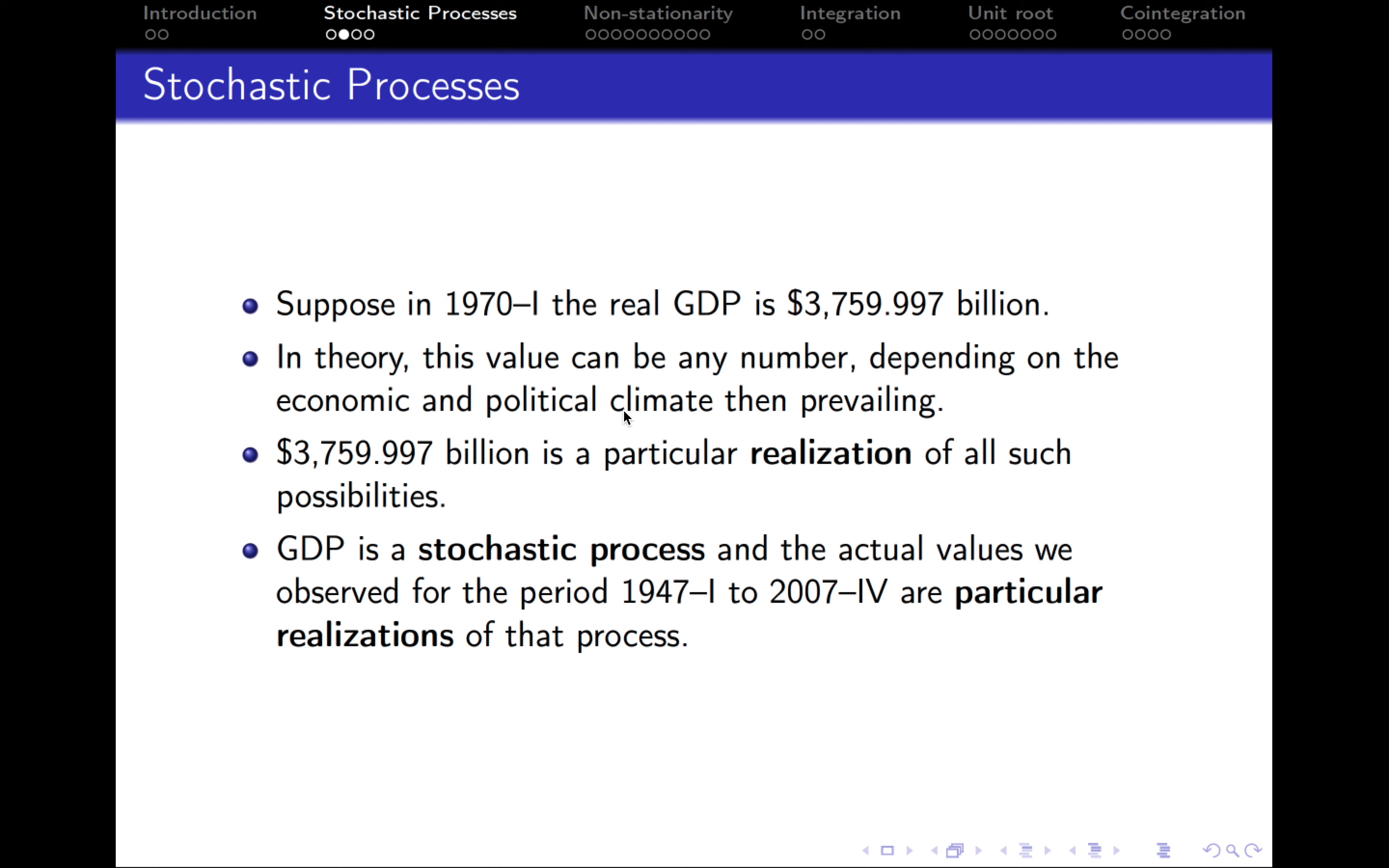Therefore, $3,759.997 billion is just a particular realization of all such possibilities. GDP is a stochastic process, and the actual values we observed for the period 1947 to 2007 are particular realizations of that process. If something was different back then, those numbers would be different. There are actually infinite possibilities for these numbers, and we get one specific number because of specific factors that came into force together.